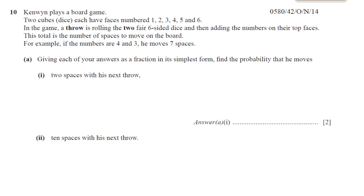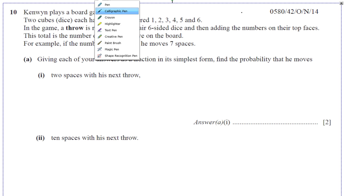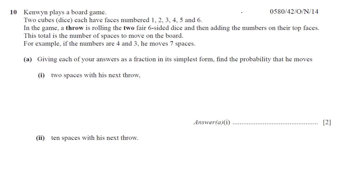We have question number 10 from October-November 2014, Paper 4, Variant 2. In this question, it's about probability, about some sort of game that some guy called Kenwin is playing a board game. We're told that Kenwin plays a board game, and two cubes, dice, each have faces numbered 1 to 6 as normal, normal dice.